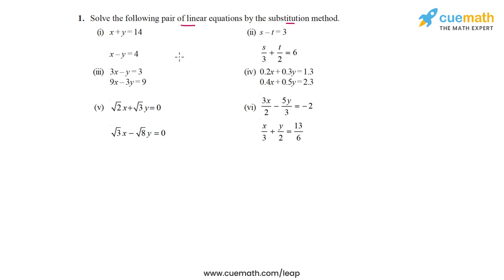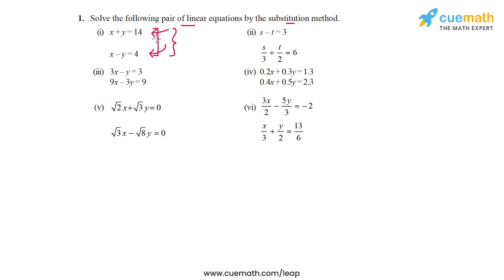What is the substitution method? It's very simple. You take any of the two equations and write one variable in terms of the other. For example, if I take this first pair, I have two equations. I can use the first equation to write y in terms of x. Then I can substitute that value of y into the second equation and get an equation in x alone and find the value of x. And once I have found the value of x, I can substitute that value back into either of the two equations and get the value of y.